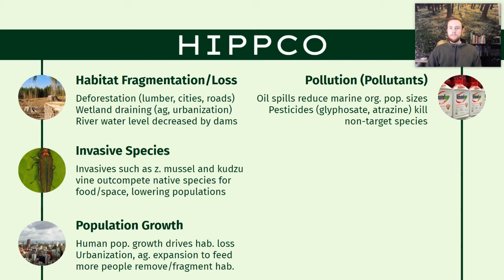Oil spills are a great example — as we need to supply more oil for more people to drive, the increased likelihood of spills is going to occur. We also have pesticides; specific ones include glyphosate and atrazine, which kill non-intended target species when they run off agricultural fields or when the wind carries these pesticides away as they're being applied.